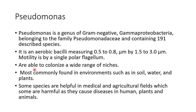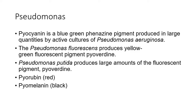Pseudomonas is known to colonize a wide range of niches — in different kinds of environments you will find different species of Pseudomonas growing well. They are most commonly found in environments such as soil, water, and plant surfaces. In today's video we are also using soil and water as our sample. Some species are helpful in medical and agricultural fields while some are harmful as they cause diseases to humans, plants and animals.